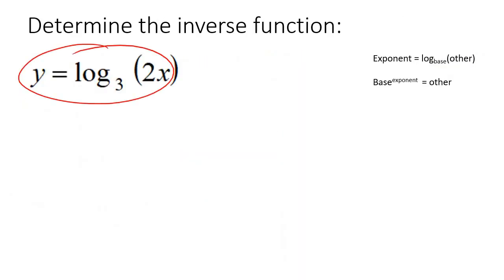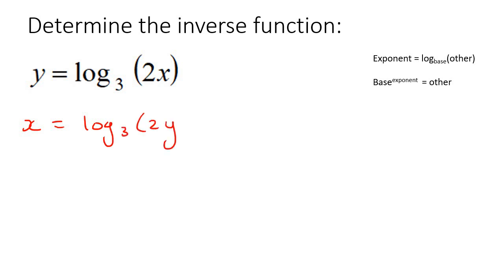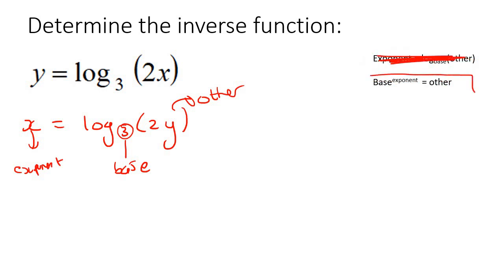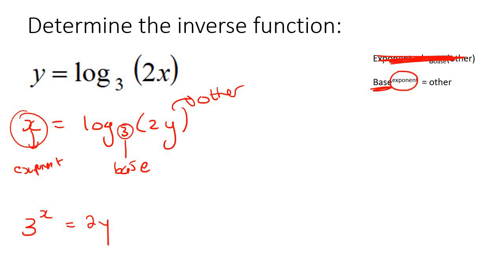Here we have a log equation and they want us to find the inverse. Step one: switch x and y around - that is your first step. Now you have to try to get this y by itself. Look at this equation - it's a log equation. The number that is next to the log, call that the base. This part here, label that as 'other.' And then this part here, label that as 'exponent.' Now scratch that out and rewrite it: put the base first, which is 3, then the exponent, then the other, which is 2y. Then get y by itself by dividing by 2. And there you did it - we've got y by itself.